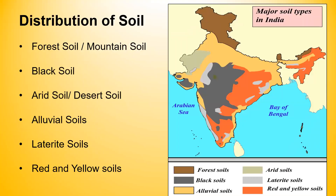How is the distribution of soil happening in the Indian mainland? We have forest soil, black soil, arid or desert soil, alluvial soils, laterite soils and red and yellow soils. If we read the color code or the color key, you will find that forest soil is brown in color. Forest soil is essentially found in the Himalayan region and parts of northeast India.